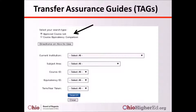Let's take a closer look at the approved course list. You may be wondering when this search option can be utilized. One example may be if you are looking for information about your institution's progress on TAG approvals. Two other examples include referencing what TAG courses in a particular discipline are available at neighboring institutions, or determining whether a specific TAG course is approved.